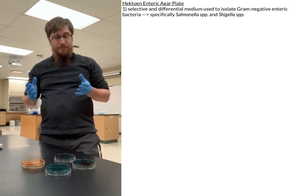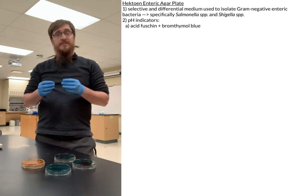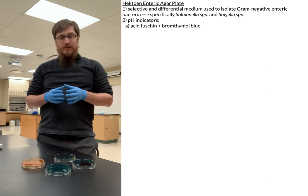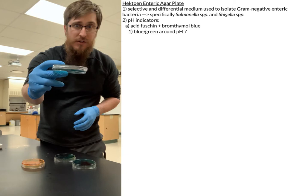Our media actually has two pH indicators in it: acid fuchsin and bromothymol blue. Together, at around pH 7, or a neutral pH, they will produce a bluish-green color, like our uninoculated plate here.